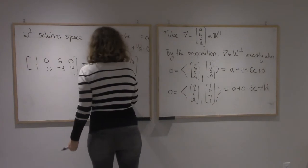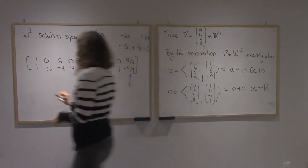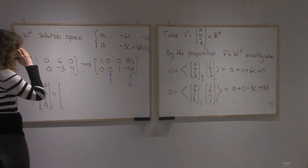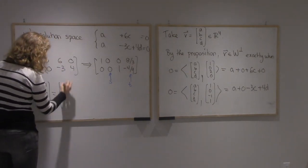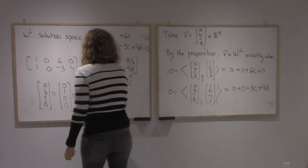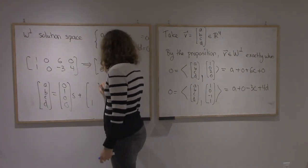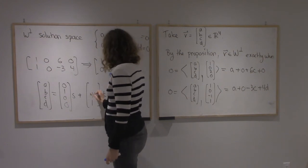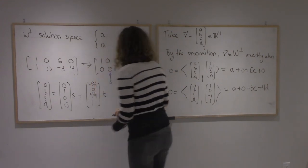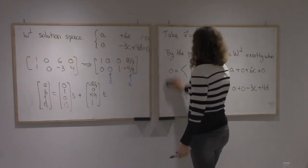So I have two free variables, S and T. That means (A, B, C, D) = S·(0, 1, 0, 0) — since B is completely independent from everything else — plus T·(-8/3, 0, 4/9, 1). From the second equation, when T = 1, C = 4/9 and A = -8/3. And so my basis will simply be these two vectors.